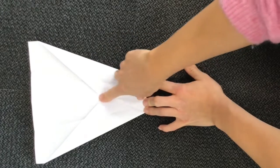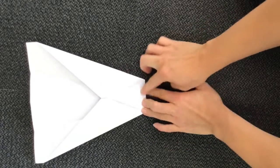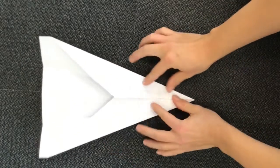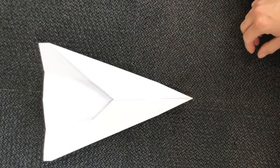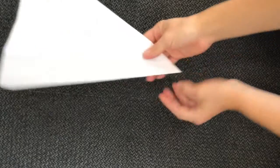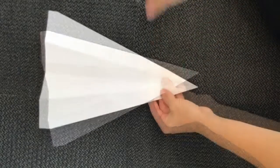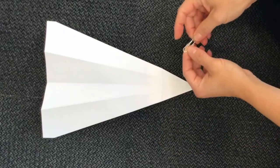And it doesn't have to be all the way but just a nice straight fold like that. And then we're gonna flip it open. Now we're gonna flip it over again. And then you can see where that crease is.